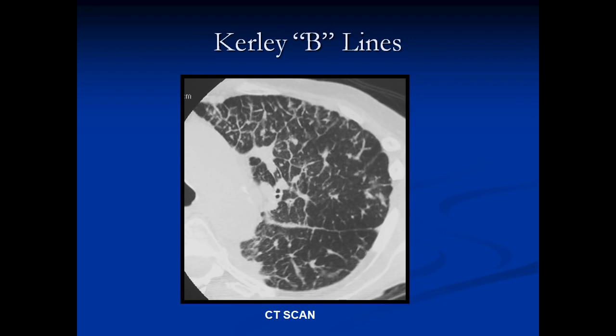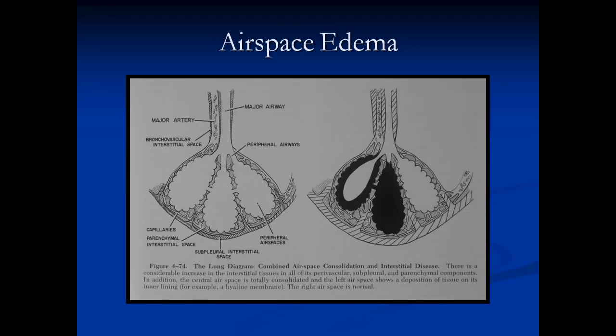Curly B lines again on CT scan just show you these perpendicular lines as they come in. Once interstitial edema develops to a certain degree, there's no more space in the peribronchial interstitial and subpleural space for the fluid to go, so it flows into the air spaces and then we get airspace edema. Here's a picture of airspace edema on your right — you can see peribronchial cuffing, fluid in the fissures, and now fluid inside the airspace, which leads to airspace consolidation.